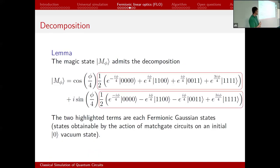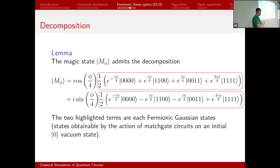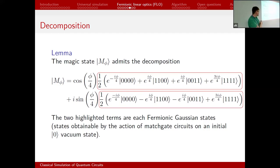There's a lemma — it's obvious enough that it's barely worth calling a lemma — which says the magic state from the previous slide can be written as a sum of exactly two FLO states. It is a sum of two FLO states, which is very nice. It's actually quite surprising that this is an orthogonal decomposition. For comparison, the same game was played for the Clifford stabilizer sub-theory about five or six years ago, and there the optimal decomposition is as far from orthogonal as you can get. Here, it happens to be orthogonal — I don't know why.